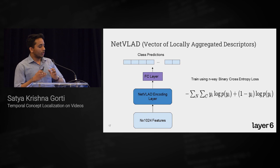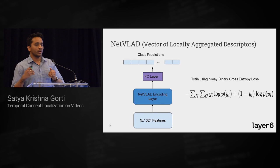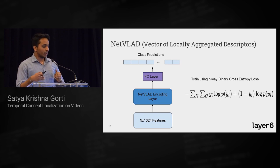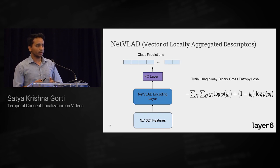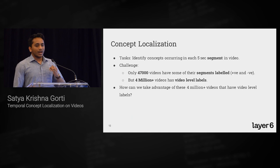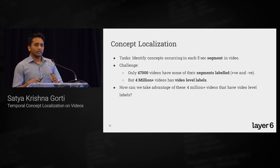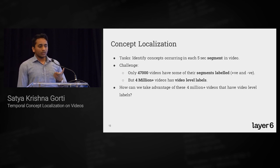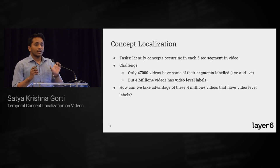At a high level, any model takes an N×1,024 feature matrix, passes it through an encoding layer — which could be NetVlad, a Transformer, or an LSTM — and then has a final classification head trained with N-way binary cross-entropy loss. Until now we've been looking at recognition for the whole video. Localization involves classifying each segment into classes.